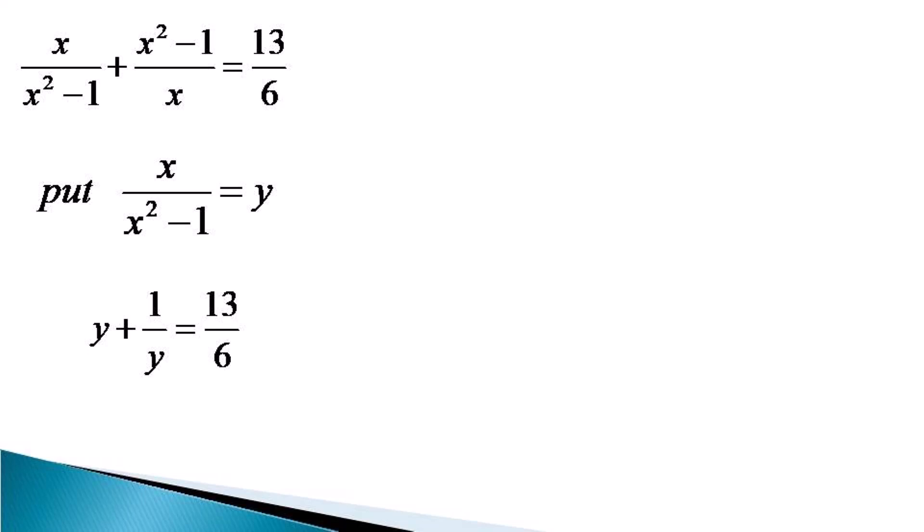Now multiplying both sides by 6y to remove the fractions, we get 6y² + 6 = 13y.